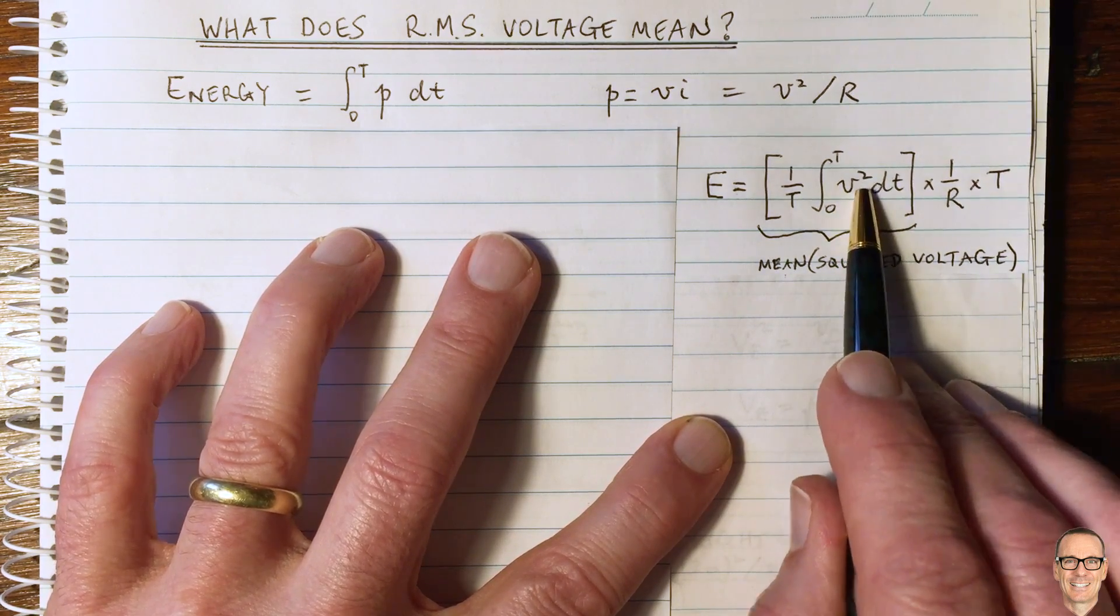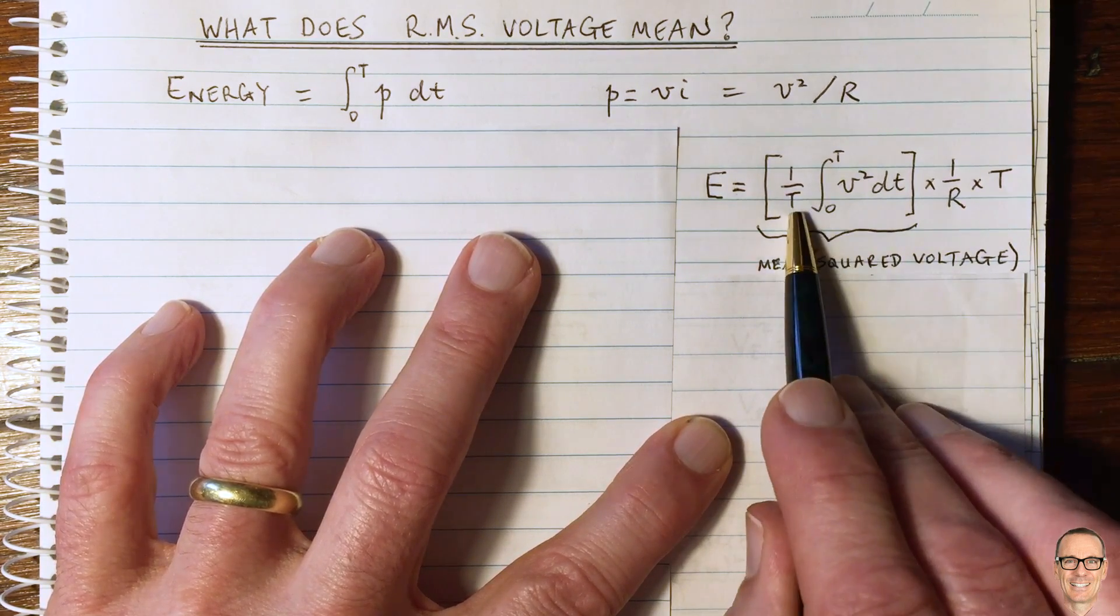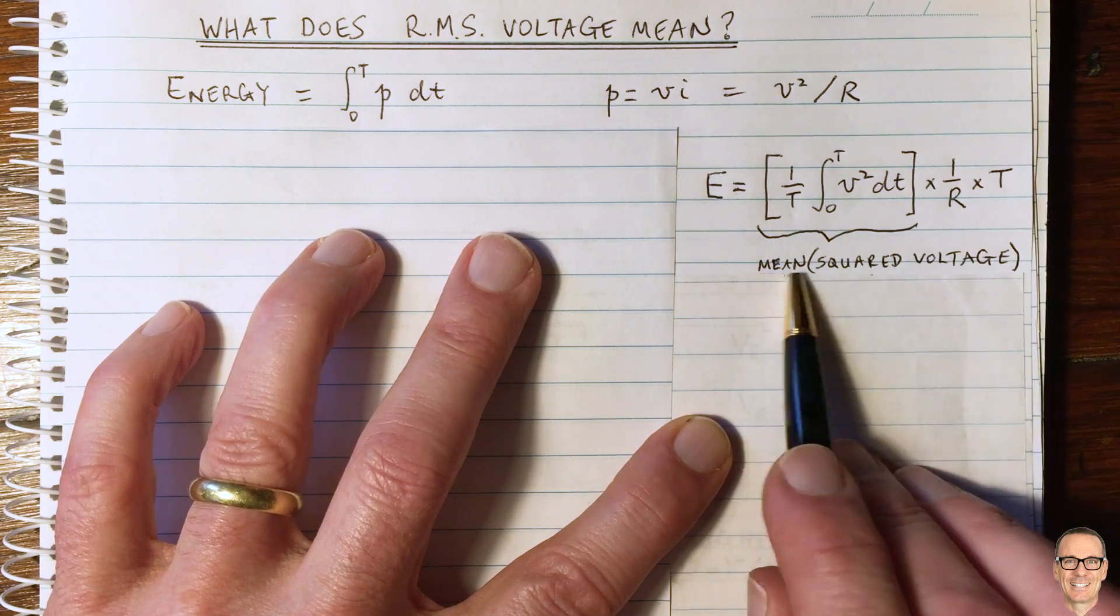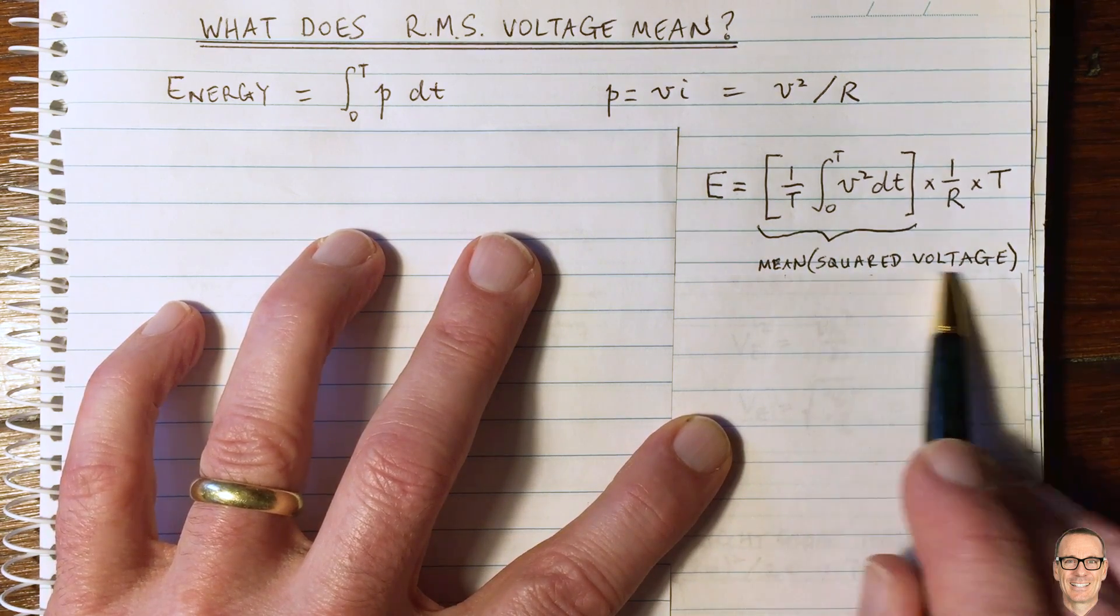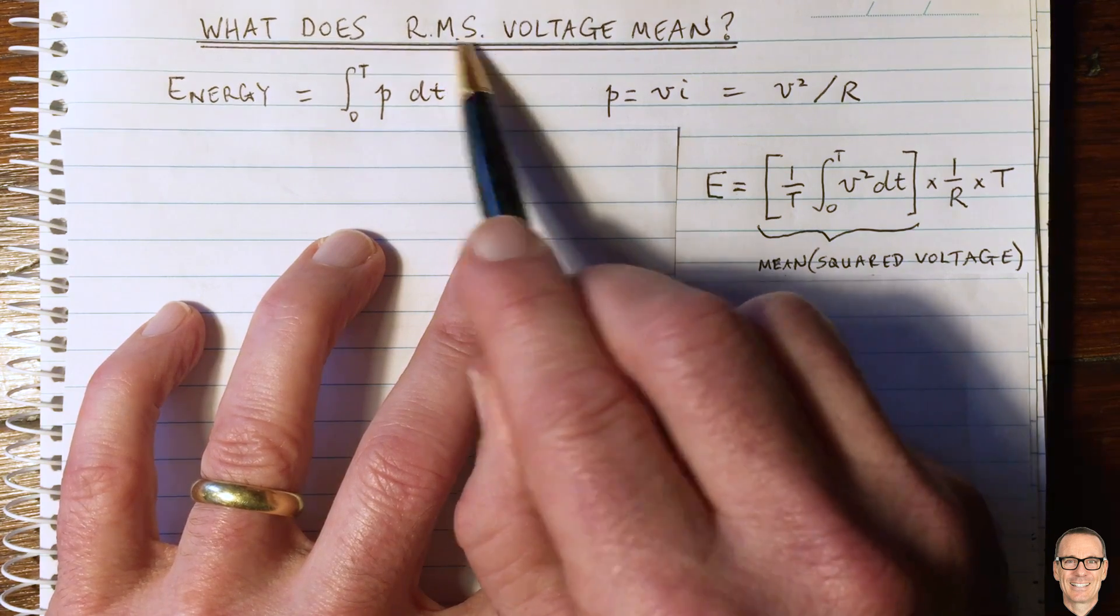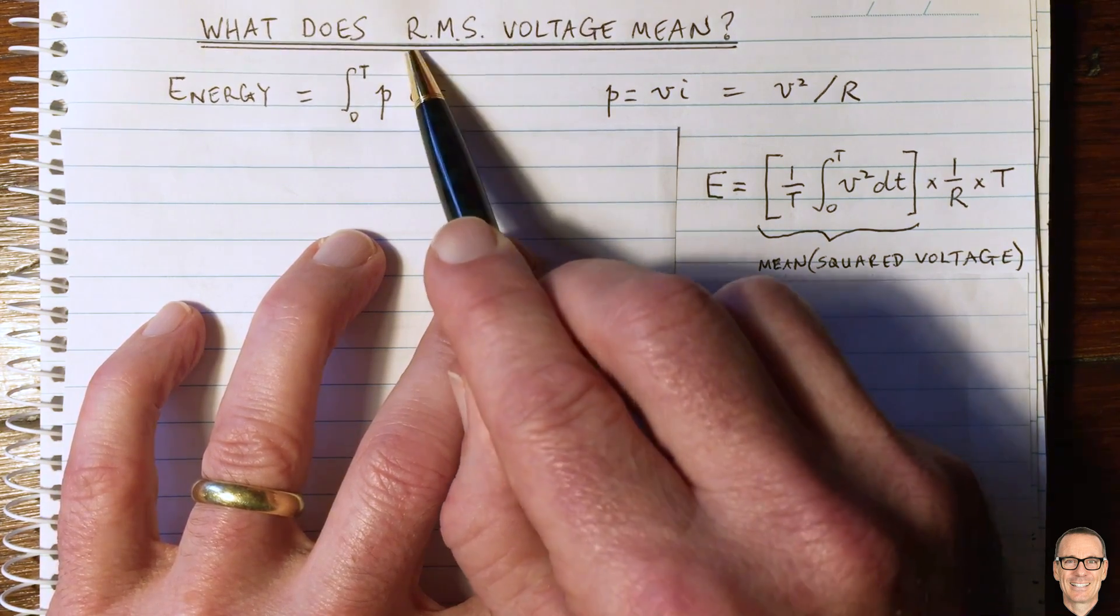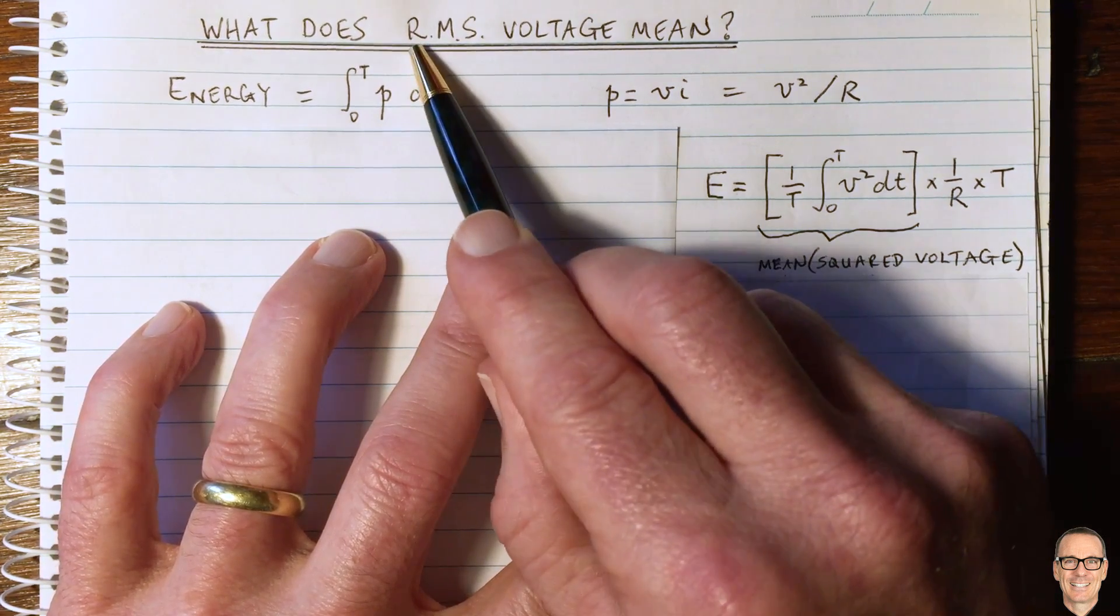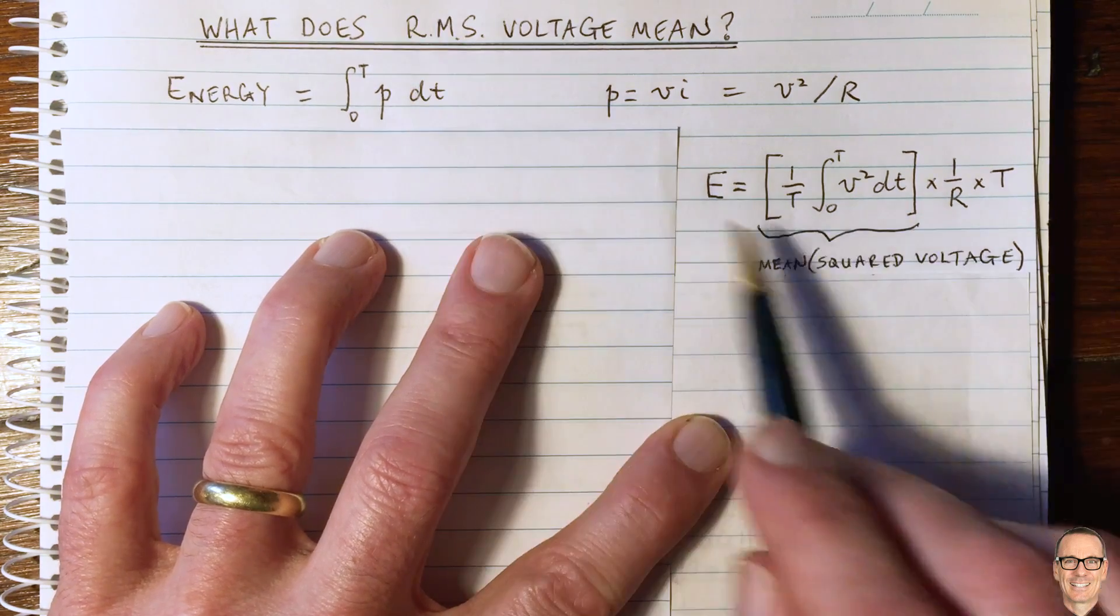Here's the voltage squared. And we're adding it up over time and dividing by capital T. So that's the mean. It's the average of the squared voltage. So this is the mean squared up here, and we're getting towards this RMS. We've still got to find out about the R component though.